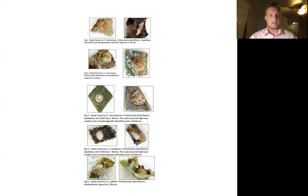The scale pictured on the right was unable to be morphologically identified with confidence. We have the same story in Figure 4 with scales collected on Ceanothus crassifolius. On the left we have Aspidiotus nerii.